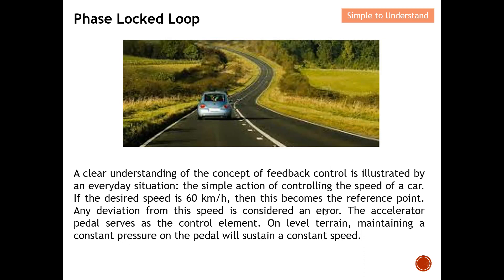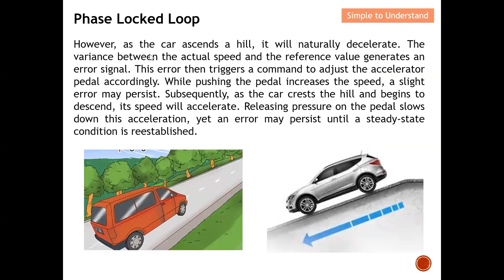On level terrain you can maintain a constant pressure on the pedal, which sustains a constant speed of 60 km/h. However, when your car climbs a hill, it will naturally decelerate — the speed will reduce. The variance between the actual speed and the reference value generates an error signal. That error then triggers a command to adjust the accelerator pedal accordingly.